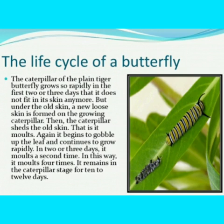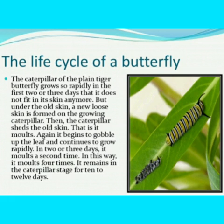The caterpillar of the plain tiger butterfly grows so rapidly in the first two or three days that it does not fit in its skin anymore. But under the old skin, a new loose skin is formed on the growing caterpillar. Then the caterpillar sheds the old skin — i.e., it molts. Again, it begins to gobble up the leaf and continues to grow rapidly. In two or three days, it molts a second time. In this way, it molts four times. It remains in the caterpillar stage for 10 to 12 days.